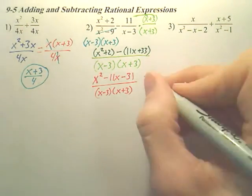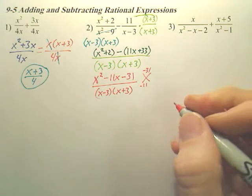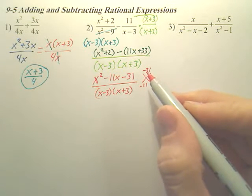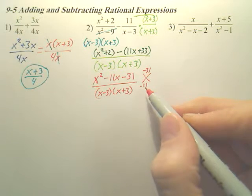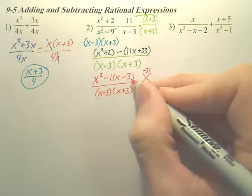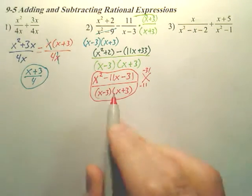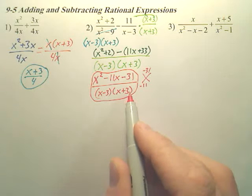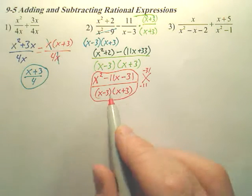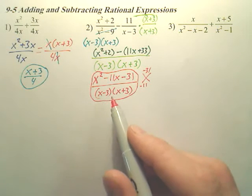Now, can I factor that? Well, isn't 31 prime? So could I find any two numbers that would add up to 11 or negative 11? No. There's no GCF, so that actually is my answer. Nothing else I can do. Could I foil out the bottom if I wanted to? Yeah, if it's a multiple choice test and your answer is not in this form on the bottom, you might have to foil out the bottom again if they want it. Most of the time you don't want to do that, but sometimes they will on a multiple choice test.